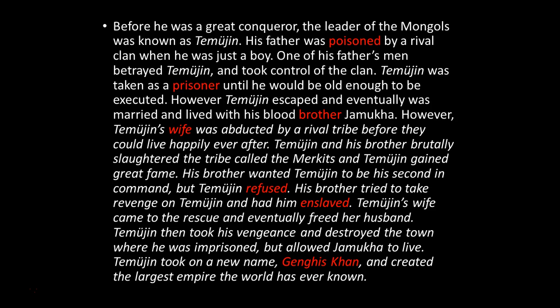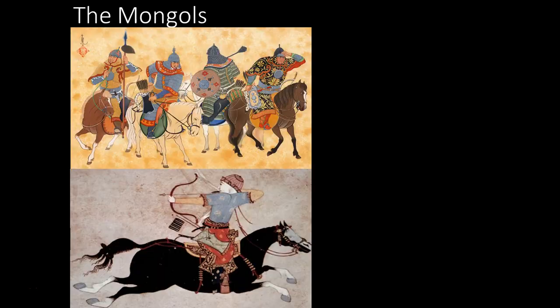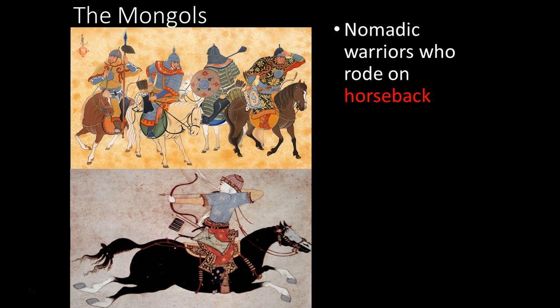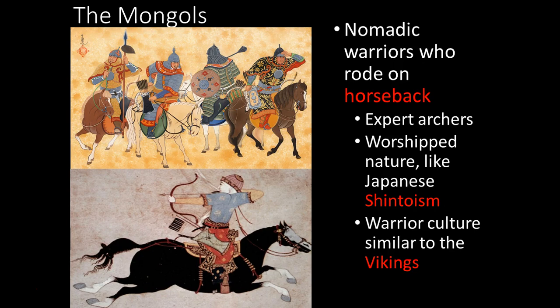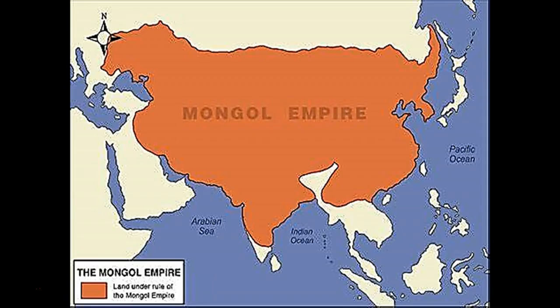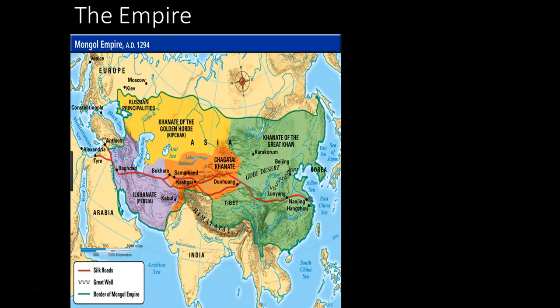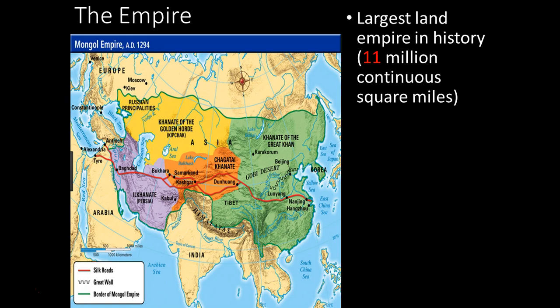Temujin uses all that vengeance and anger and becomes known as Genghis Khan, leader of the Mongolian people. He unites the tribes and uses meritocracy to run his empire — choosing people who are fit and strong to help rule — and he inspires terror among those he fights. The Mongols ride on horseback, are excellent archers, skilled with stirrups, practice nature worship with their god Tengri, and have a Viking-like warrior culture. The Mongol Empire is the largest continuous land empire in history, something like 11 million square miles.